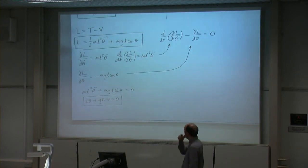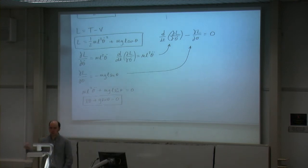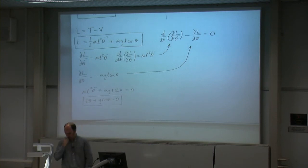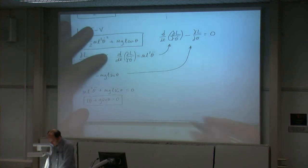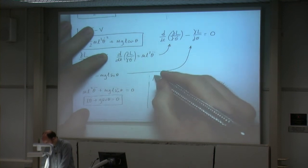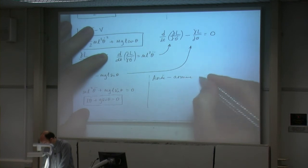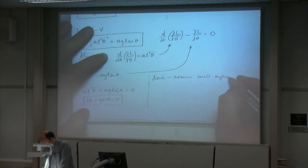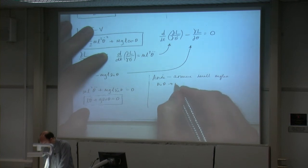Whether you hang a feather from a pendulum, or a person, or a bus — the period of oscillation would be the same. We know that. And just to show that this is indeed correct, let's assume small angles.